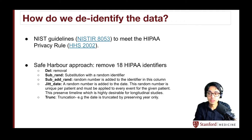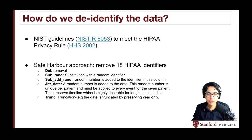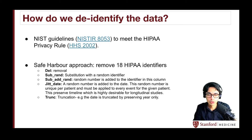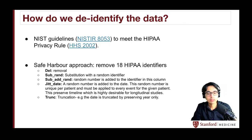For internal Stanford research, we jitter the dates — we shift those dates by a certain amount so we preserve the patient timeline. We can also truncate the information. If it's a date, we truncate by just keeping the year, or the month, or the day.